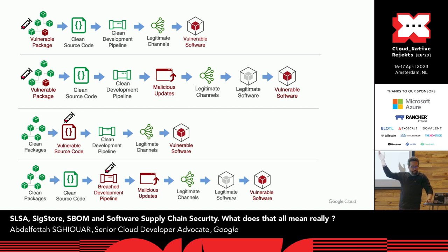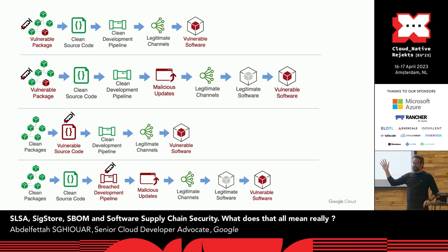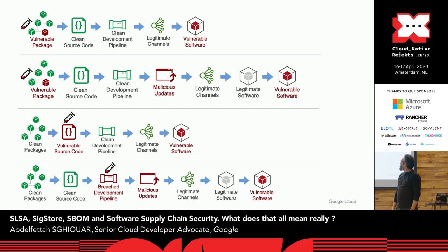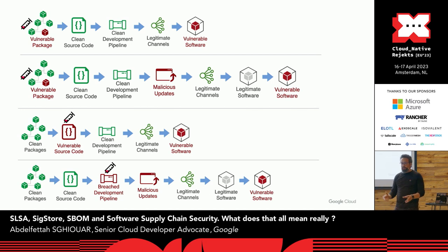You could start with a vulnerable package that gets through a clean pipeline, but then eventually you do an update — like having apt-get install in your Dockerfile, or not pinning dependencies to specific versions or commit SHAs. You could also have an internal malicious attacker. A security researcher once managed to commit code to the Homebrew source repository by initially committing legitimate code, gaining maintainer trust, and eventually getting committer access.